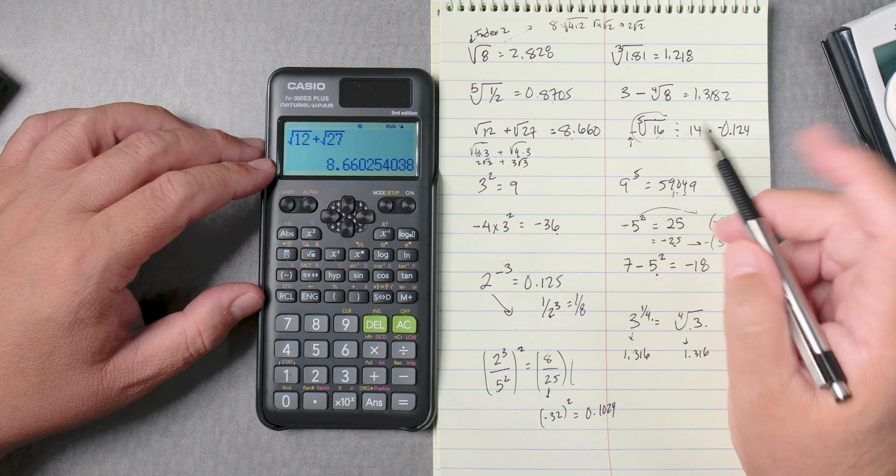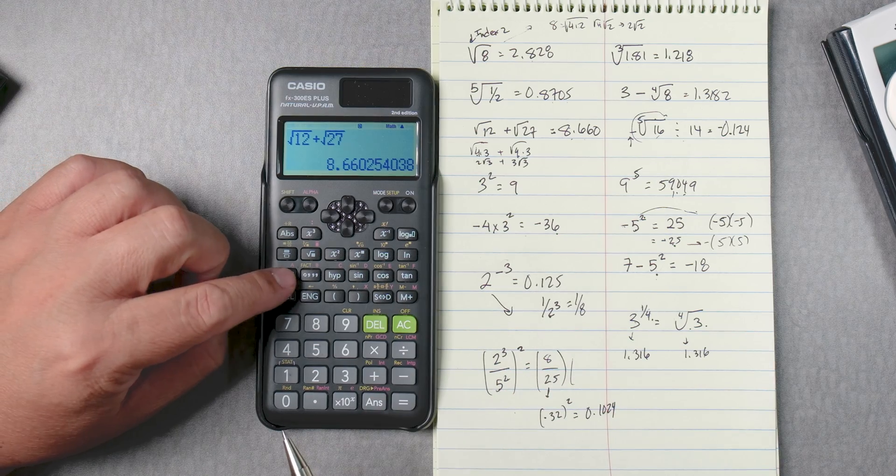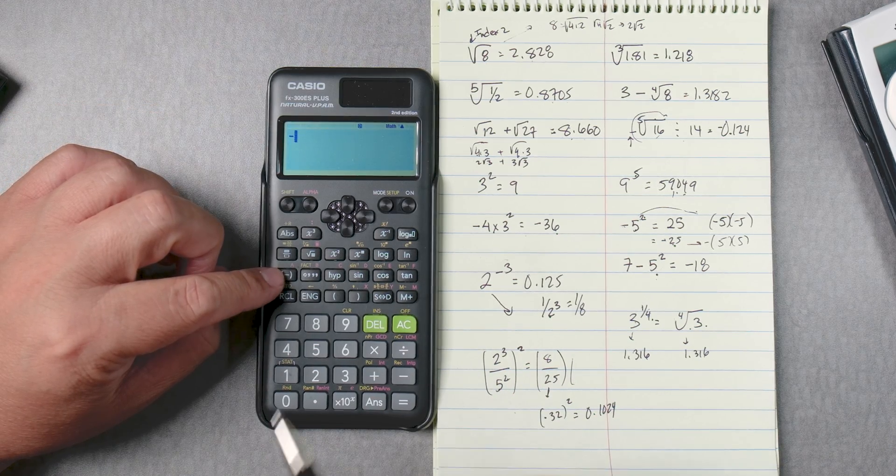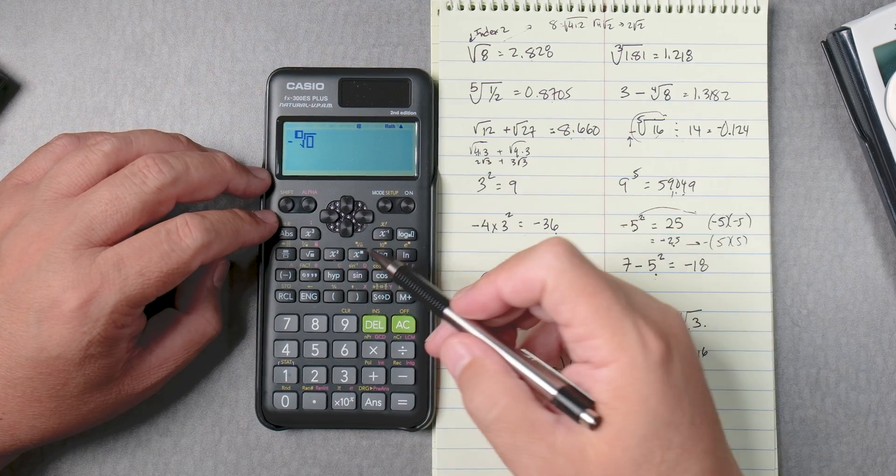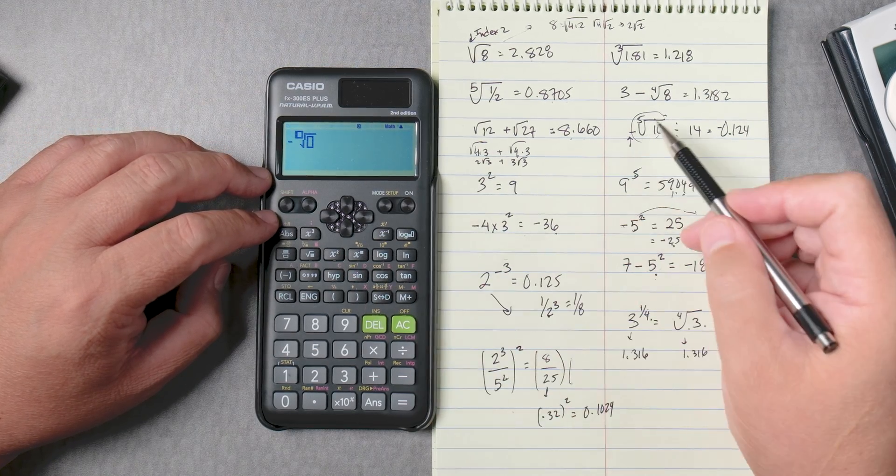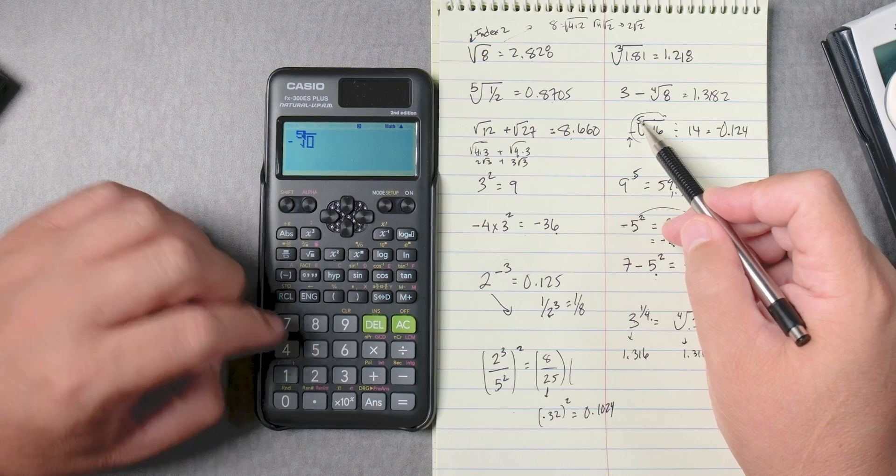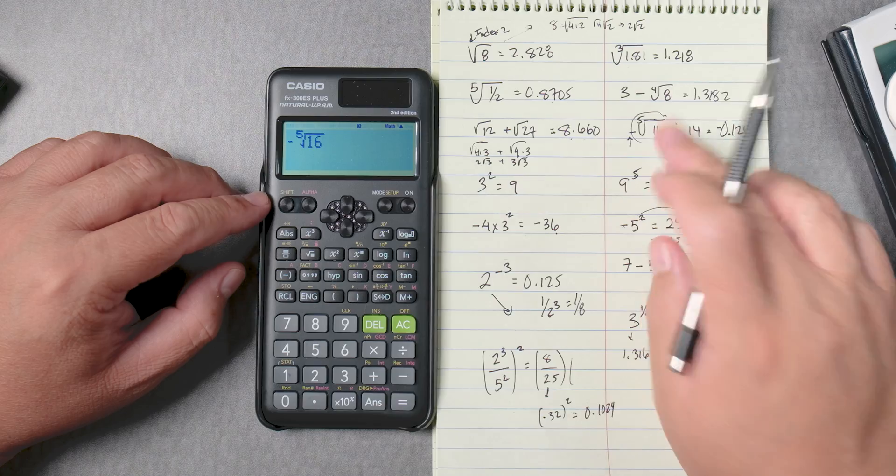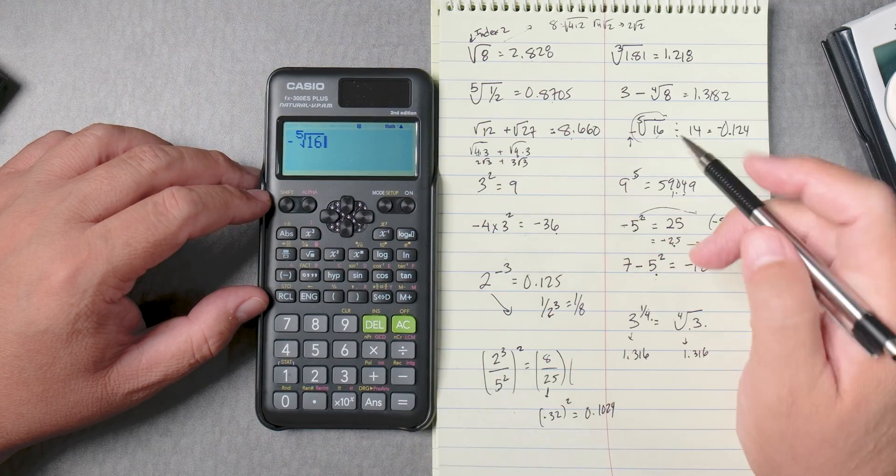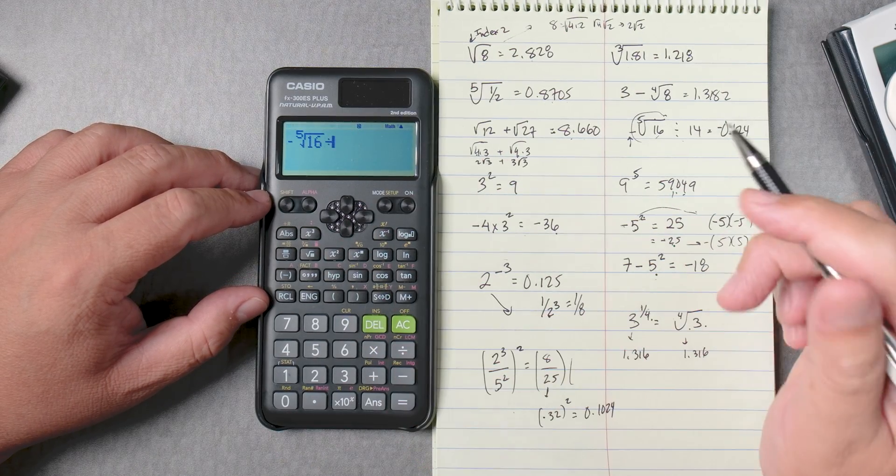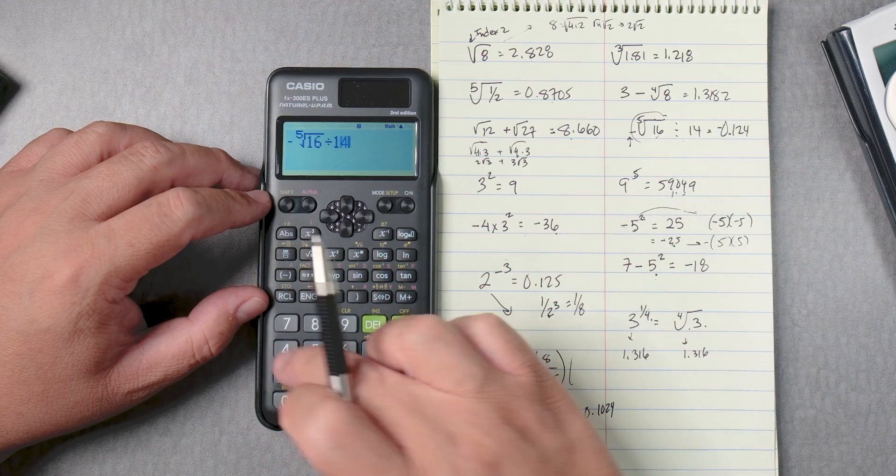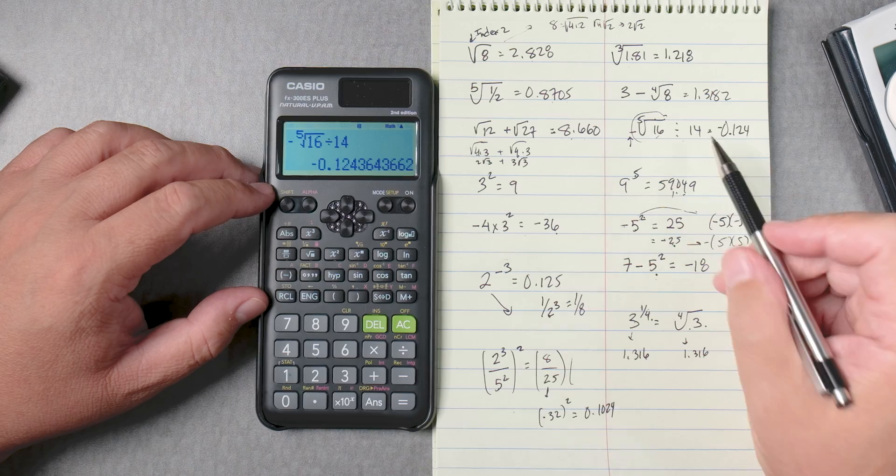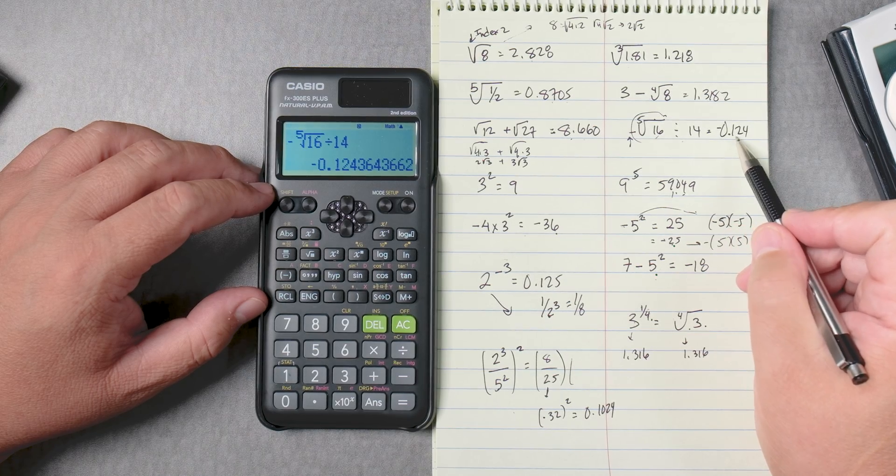This one looks a little complicated, but it's not. Here we'll probably press the negative key, not the subtraction key. Then shift, X to the square, because I want the fifth root. Then I move the arrow over, 16. I want to get out of that root, so we press the arrow again. Then we're going to divide by 14, and look how it's written, and this is how you see it. That's the nice thing about this calculator. Negative 0.124. Nice.